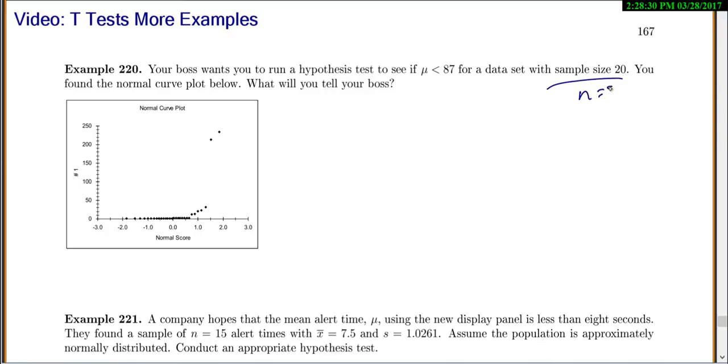So there's n equals 20, and we found our normal curve plot below. What are we going to tell our boss? So first of all, I look at this normal curve plot and this is definitely not a straight line. It's not even close, right? So our data is not normal.